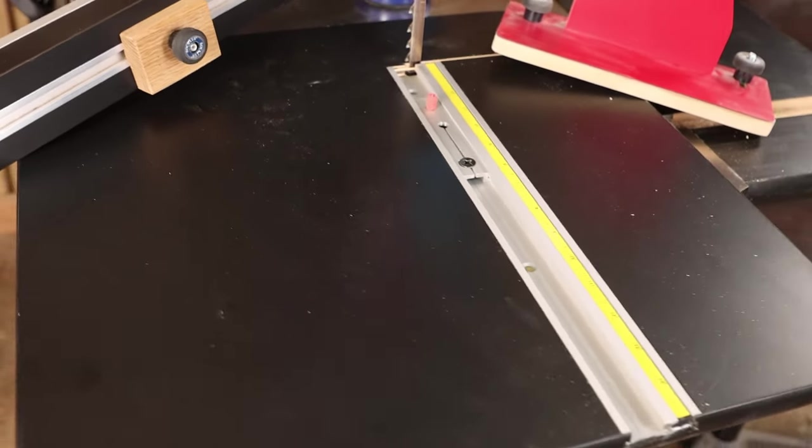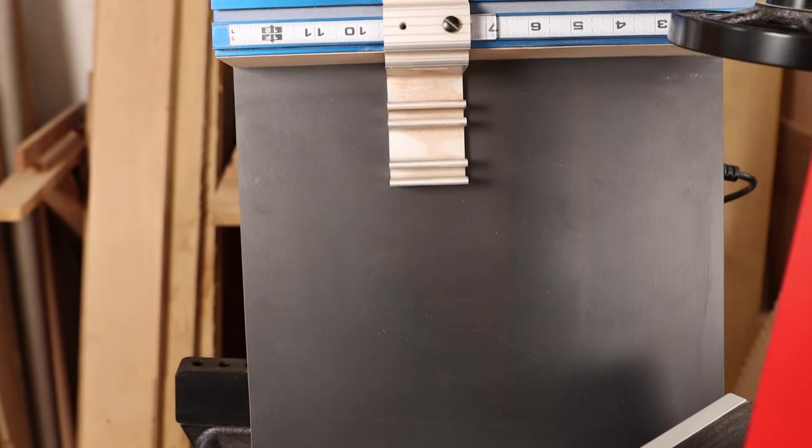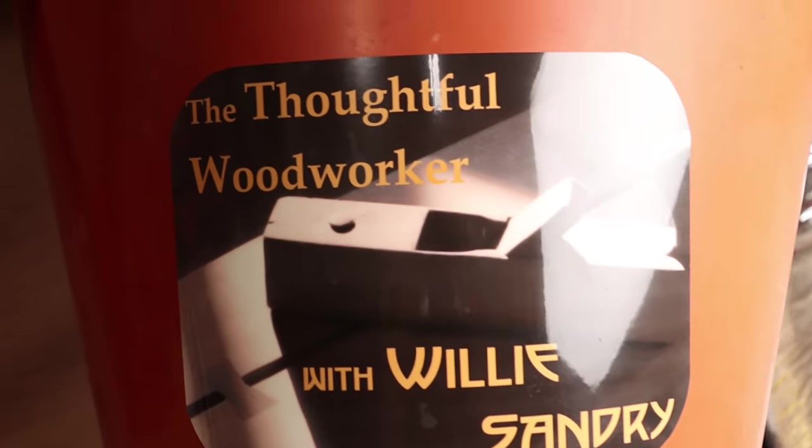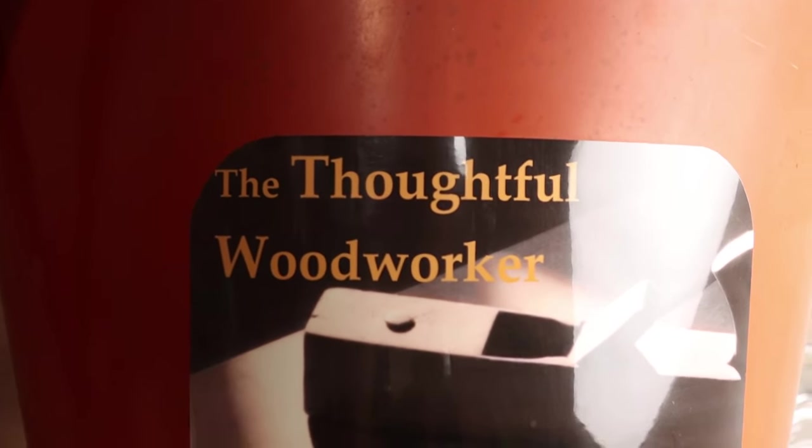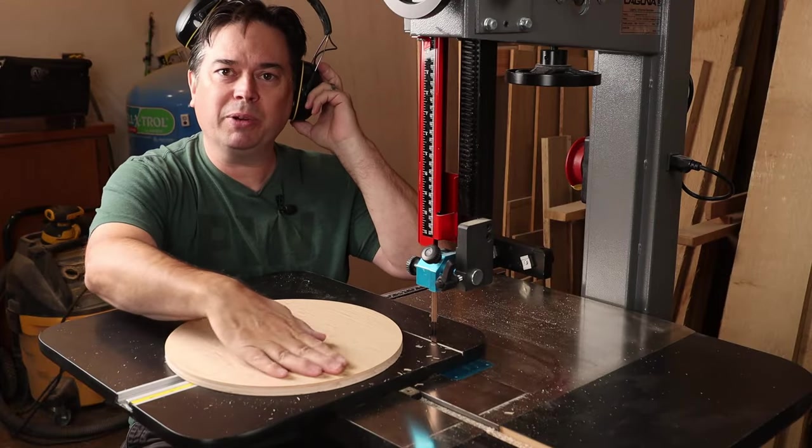Let's see, checklist. Build circle cutting jig. Build small parts crosscut sled. Give Willie quick thumbs up on video. And of course, subscribe to the Thoughtful Woodworker. And your to-do list today is done. I got one turntable and a lavalier microphone.